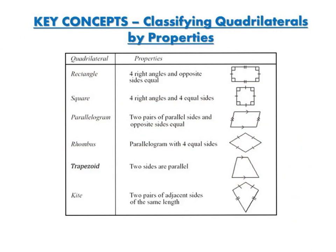The final quadrilateral is called a kite — it kind of looks like what you would fly in the air. It has two pairs of adjacent sides, where adjacent means right next to each other, and they are the same length. So there are six different kinds of quadrilaterals.